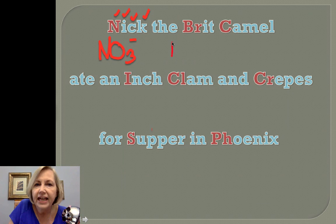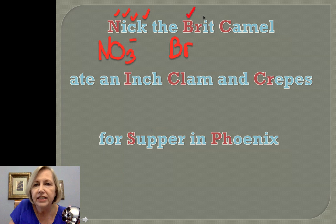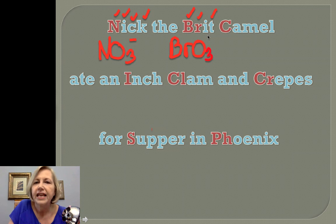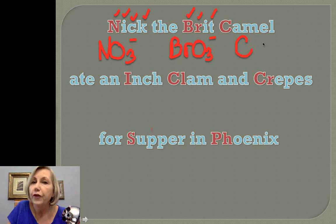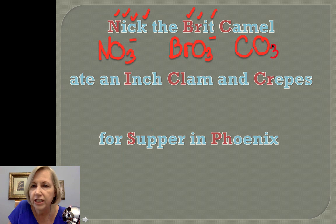'Brit' helps me remember bromate. I've got BR — one, two, three consonants — three oxygens, and one vowel, so one negative charge. 'Camel' is carbonate: three consonants gives three oxygens, and two vowels gives a two negative charge.